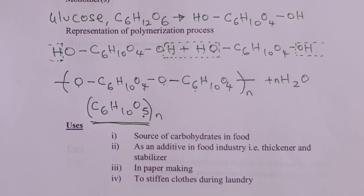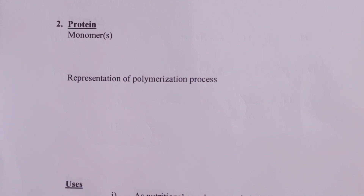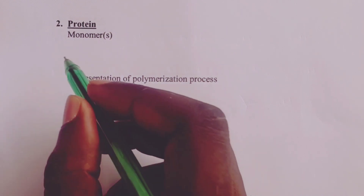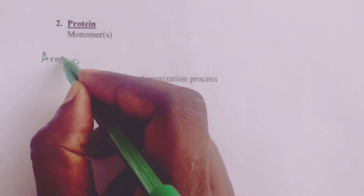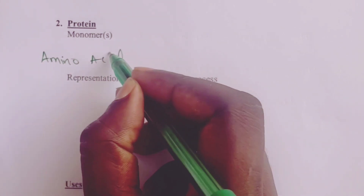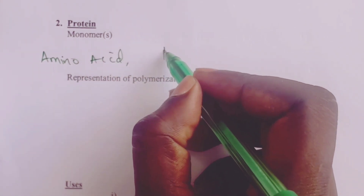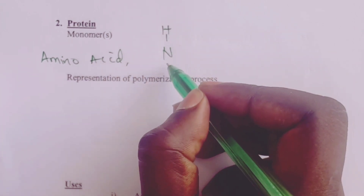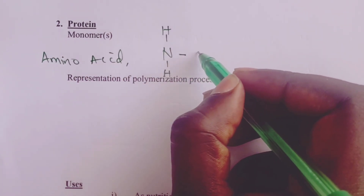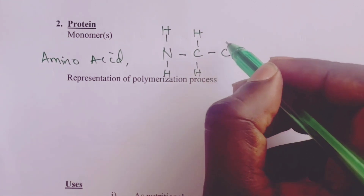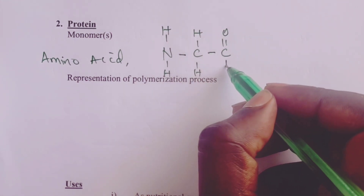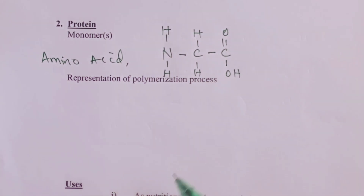The second condensation polymer we discuss is protein. The monomer of protein is amino acid. Amino acid has the structure NH2-CH2-C(=O)-OH. This is the monomer for protein.